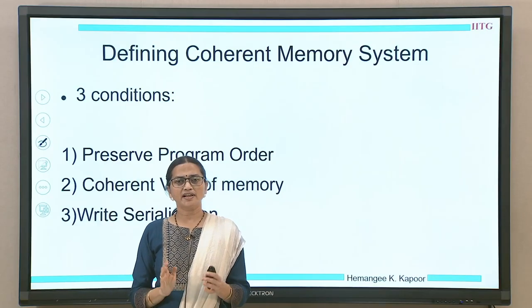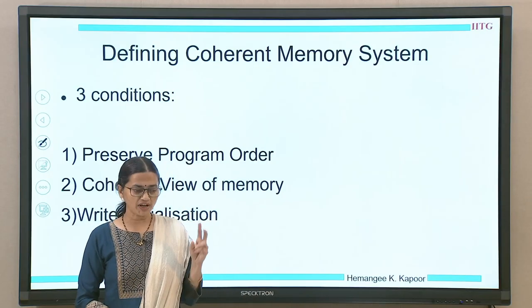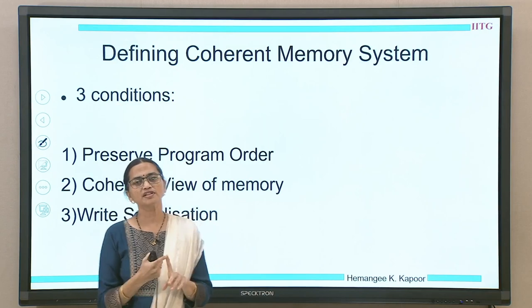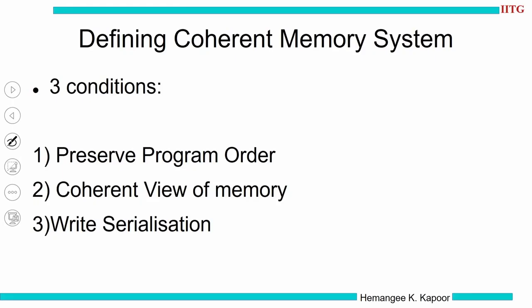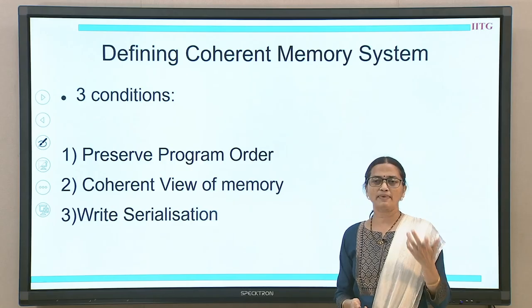To understand what is a coherent memory system, we are going to look at three conditions. The first is preserving program order, second is having a coherent view of the memory, and third is write serialization. We will see them one by one.